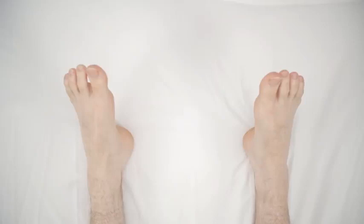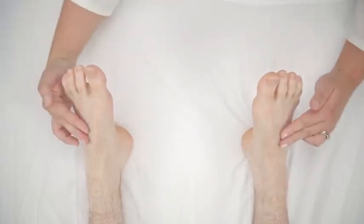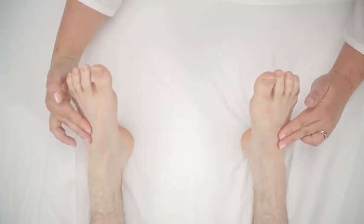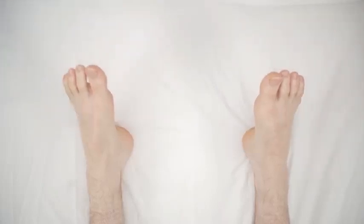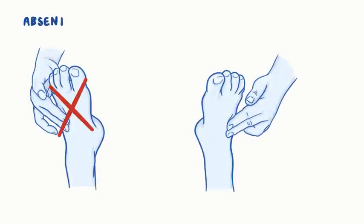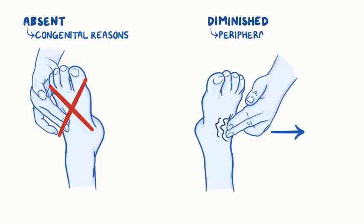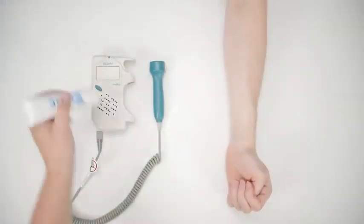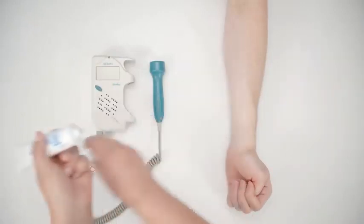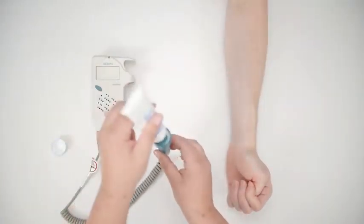And now let's take Fred's dorsal pedis pulse to assess blood flow to each foot. Tell Fred to relax his foot. Run your fingers in the groove between the extensor tendons of Fred's great toe and his first toe until you feel the pulse. Compare both sides. Fred's dorsal pedis pulse may be absent for congenital reasons, and a diminished dorsal pedis pulse may indicate peripheral artery disease. If a pulse is hard to find because the patient is young or there's swelling around the limb, a portable Doppler ultrasound can be used.